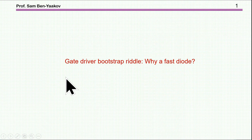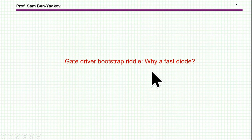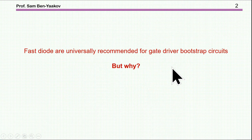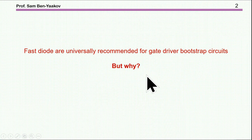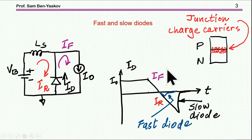Hi, I'm Sabin Yaakov. This is a riddle on a gate driver bootstrap circuit and the question is why there is a need for a fast diode. We know that it is highly recommended and it's good practice to use fast diodes in gate driver bootstrap circuits, but why? That may not be that clear, so let me start with some background.